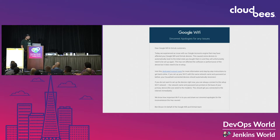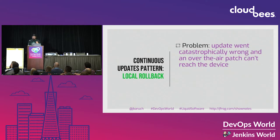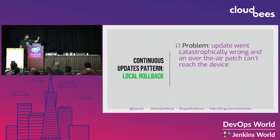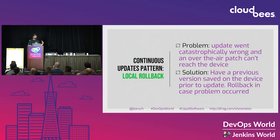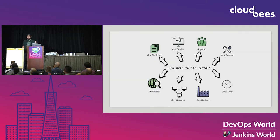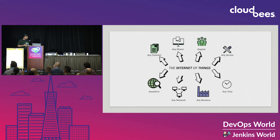The continuous update pattern here is local rollback. The problem: the update went catastrophically wrong and an over-the-air patch cannot reach the device. Instead, save the previous version on the device prior to update, and roll back automatically if a problem occurs. You might think this only applies to IoT devices, but IoT means everything - including your servers on AWS and any network, private or cloud.